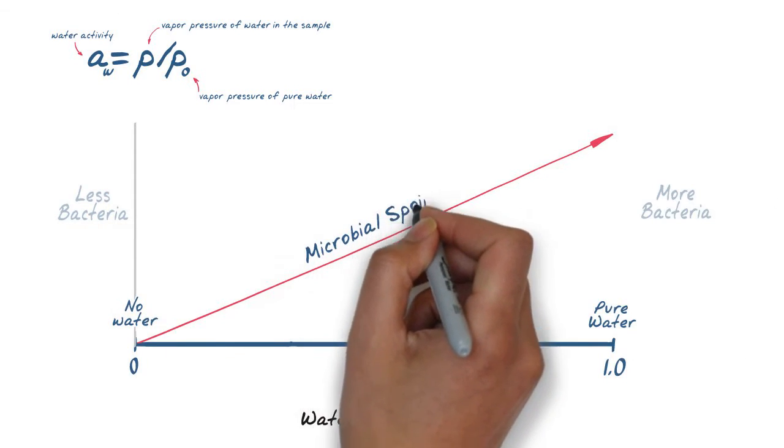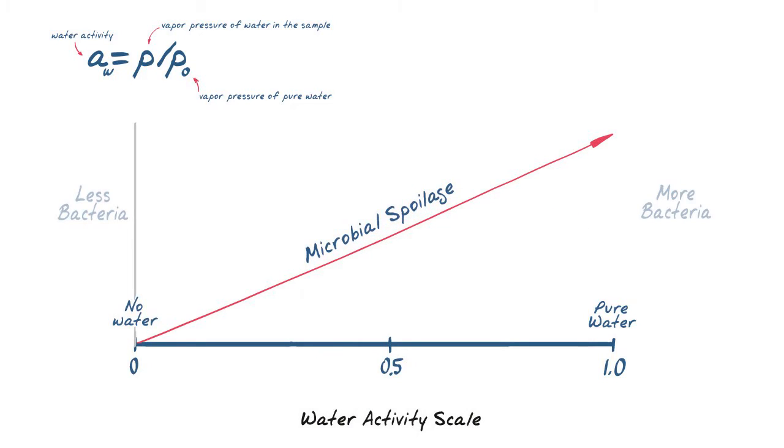Unbound water will exert vapor pressure which can be used to determine microbial spoilage, chemical, and physical stability.